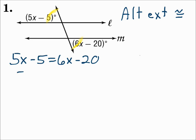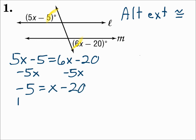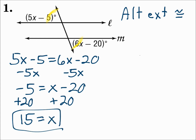Solve for X. Subtract 5X from each side, and add 20 to each side. X is 15. Since we had alternate exterior angles, we needed to make those congruent. Because if alternate exterior angles are congruent, then the lines are parallel.